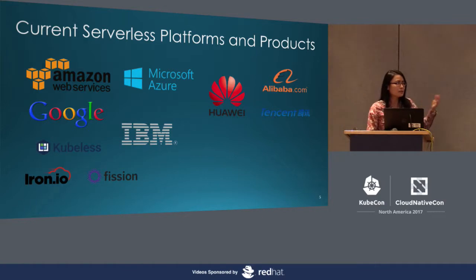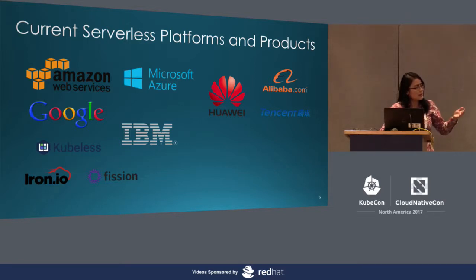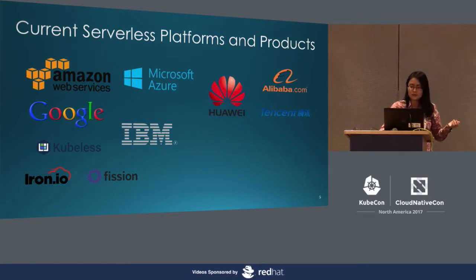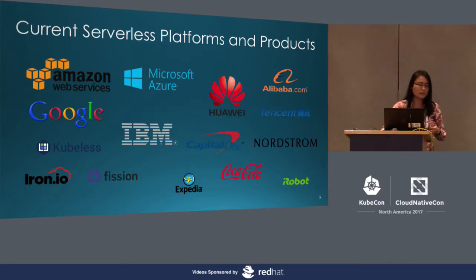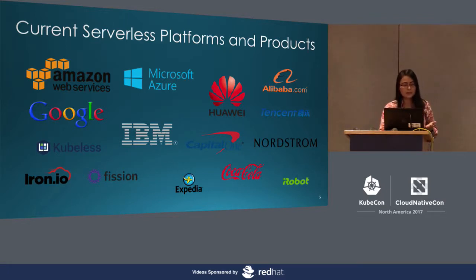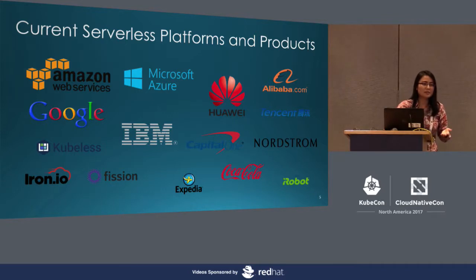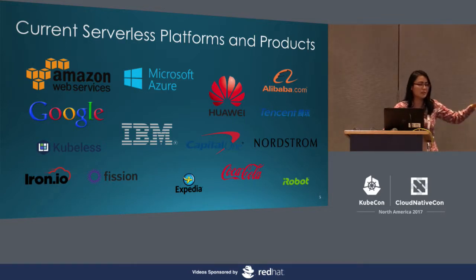However, when we performed our performance analysis, Huawei is catching up very fast. This is based on analysis done a few months ago. We've also seen many big enterprise players — retail and financial companies like Expedia, Nordstrom, and Capital One — using serverless. When we talk about security, financial is the most security-conscious sector, and they are still adopting serverless without issue.